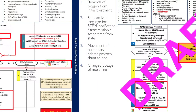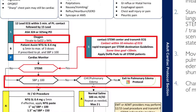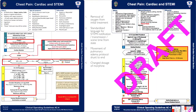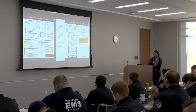Moving on to chest pain, cardiac and STEMI. Removal of oxygen from the initial treatment. We've also standardized the language for STEMI notification and transmission. We've moved the pulmonary edema protocol shunt to the end. The dosage of morphine has changed from two to five milligrams, now two to four to match with the state protocols.